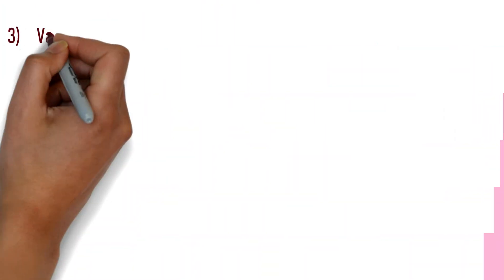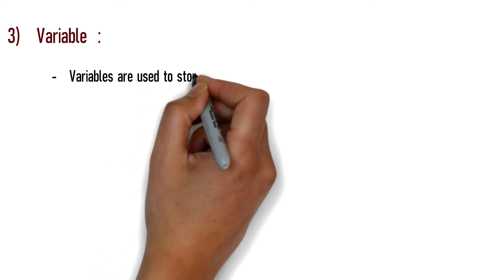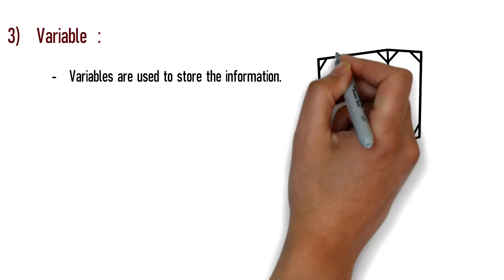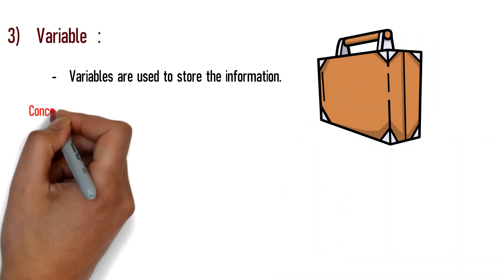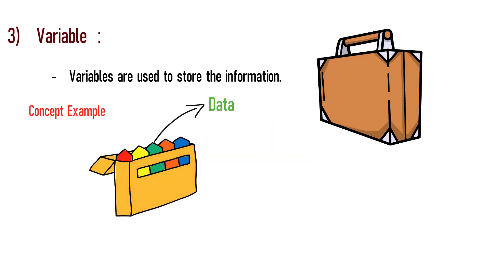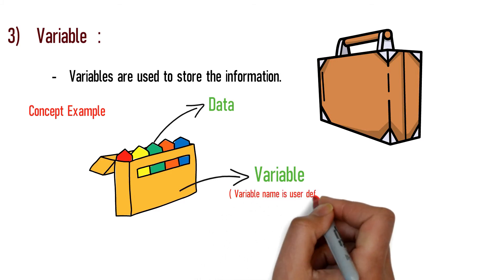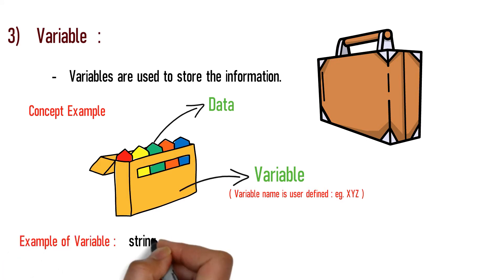Next is Variable. A variable is used to store data. For example, if you go somewhere, you can pack items in a bag — that is like a variable. You can assign values and carry the values. We can define a variable name to hold the data.